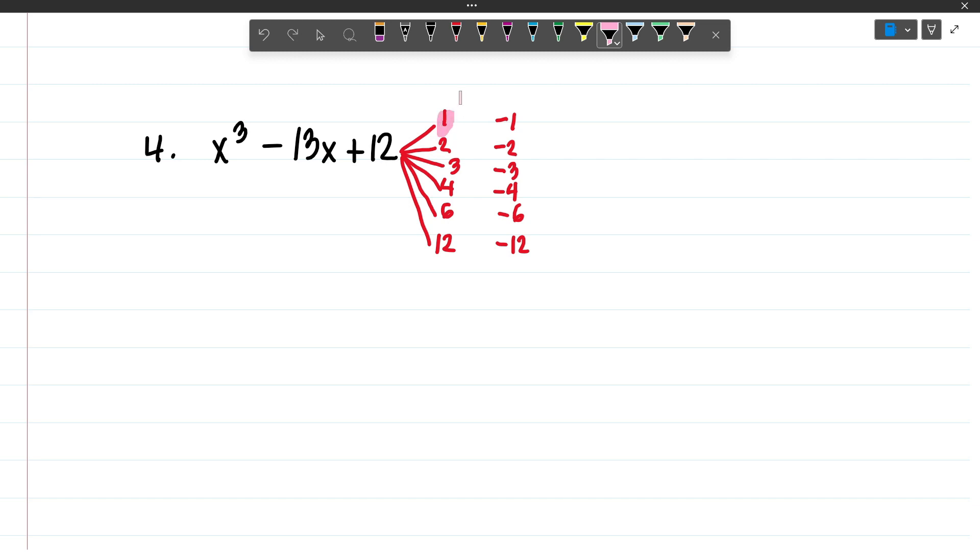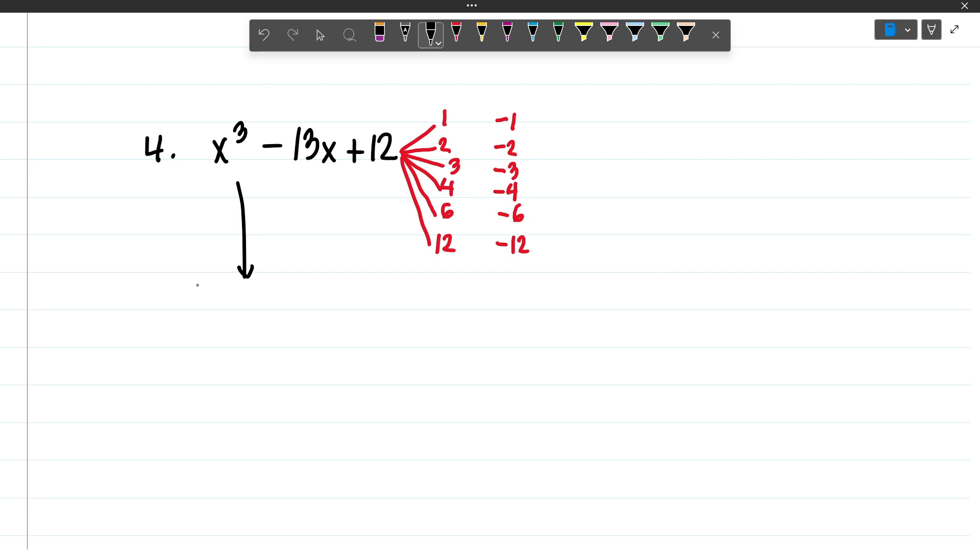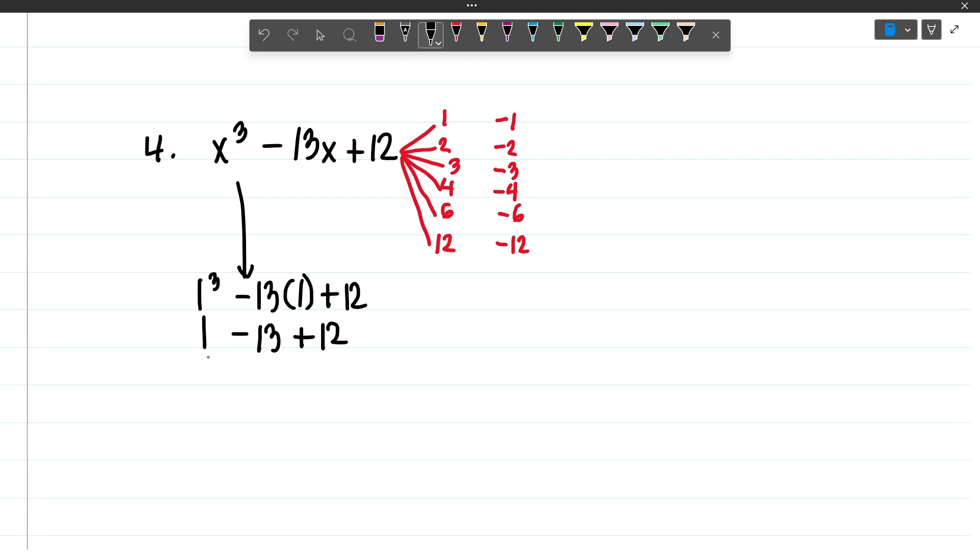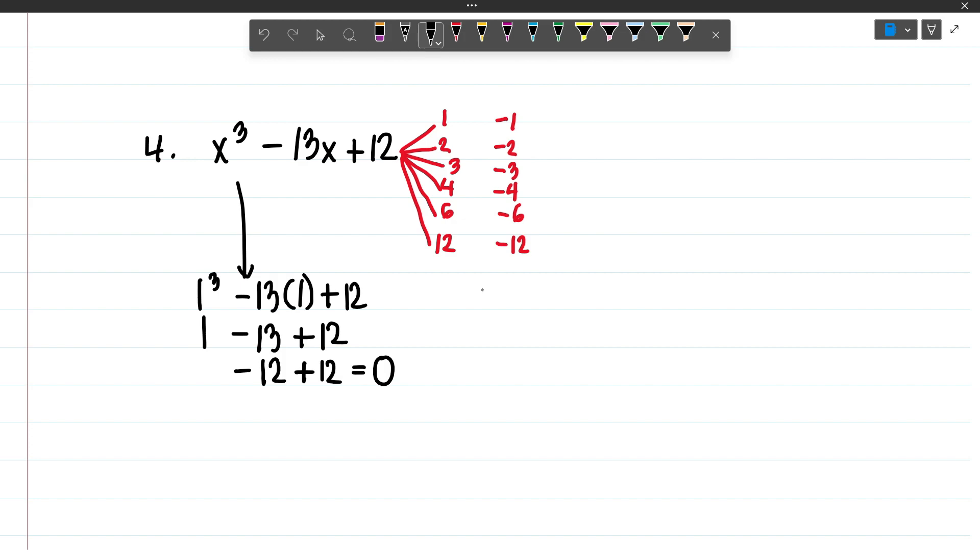Let's try 1 first. Substituting 1 to our equation, it will become 1 cubed minus 13 times 1 plus 12. 1 cubed is 1, negative 13 times 1 equals negative 13 plus 12. 1 minus 13 is negative 12 plus 12 equals 0. And so, one of our roots is x equals 1.